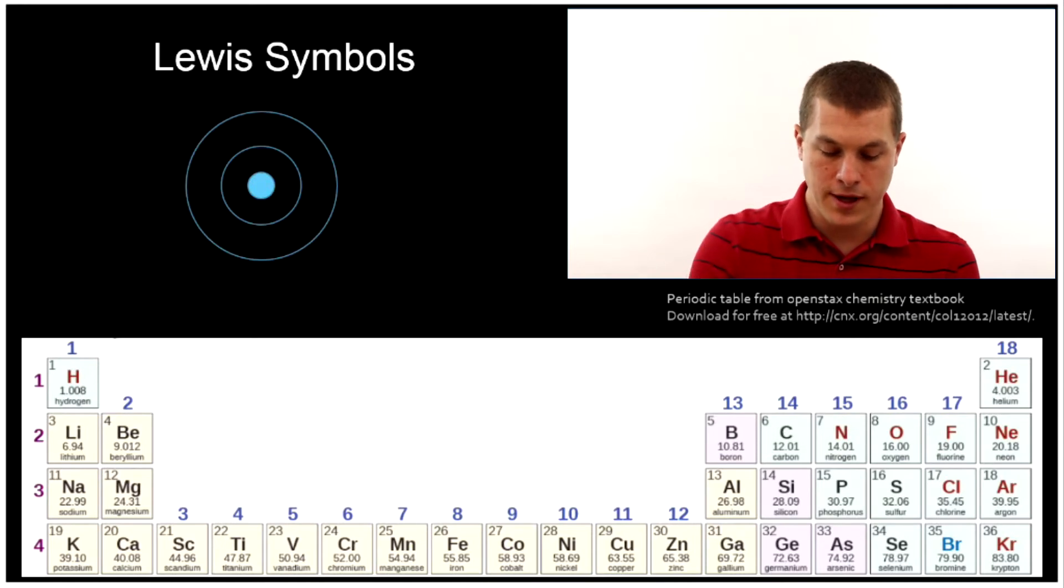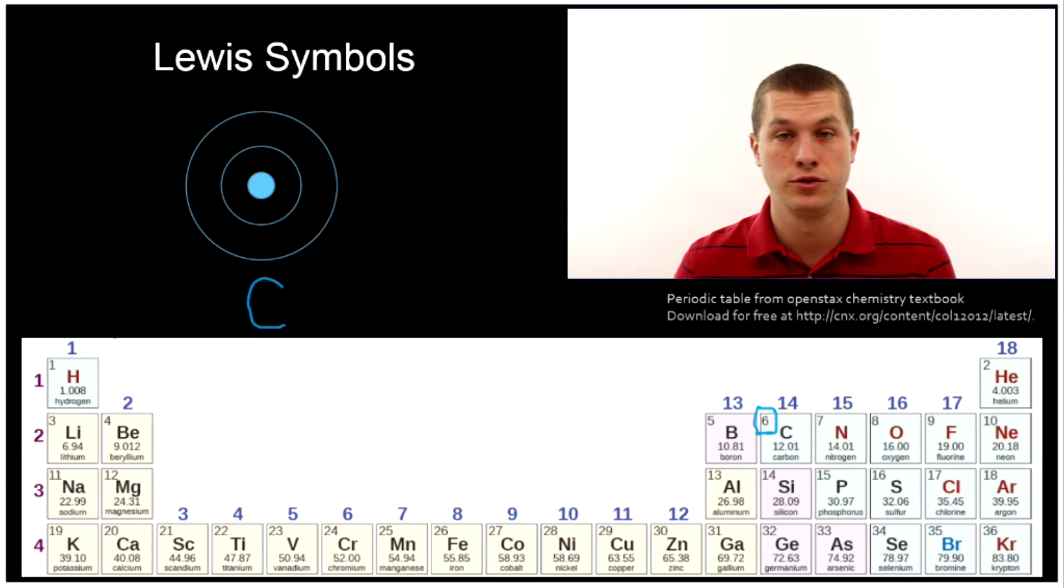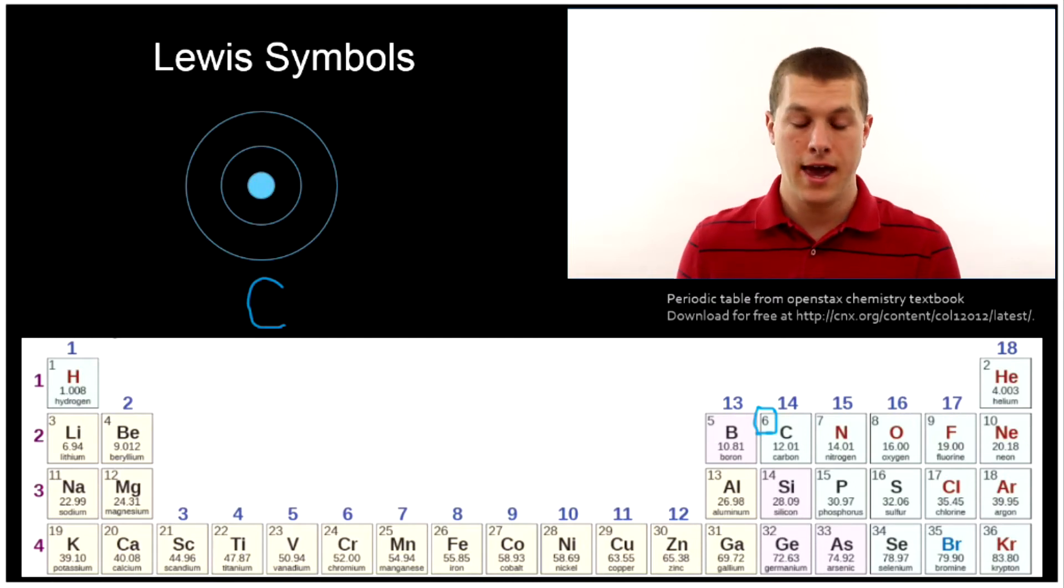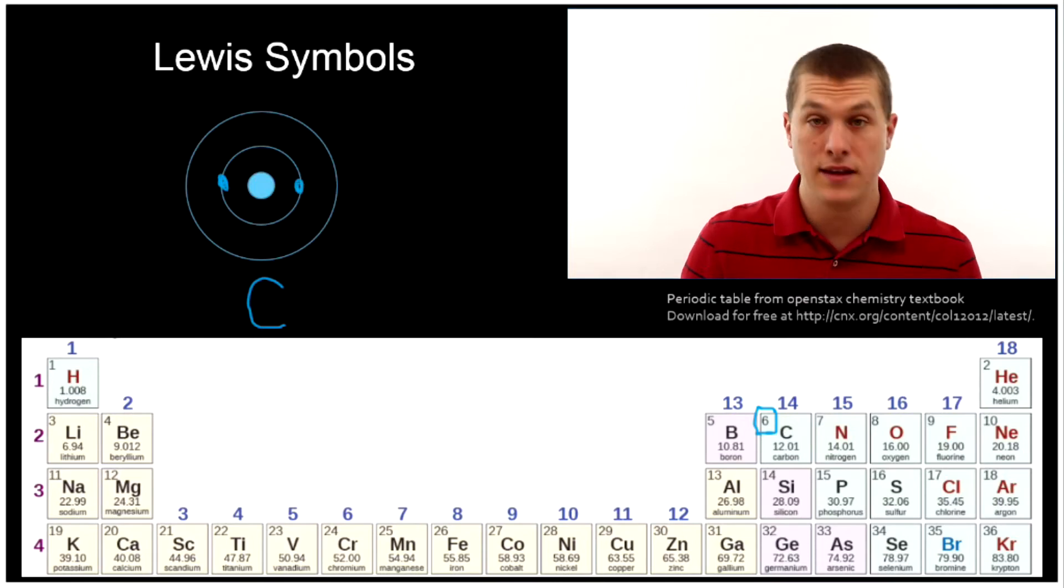Well let's pretend that this set of rings here represents a carbon atom. Inside we got the nucleus and then two rings where we can place electrons. Carbon has six electrons. That's its atomic number, six protons and a neutral carbon you'd have six electrons and that means we can fill them in on these rings and it turns out just two go on the inside and then there's four left and those go on the outer ring.